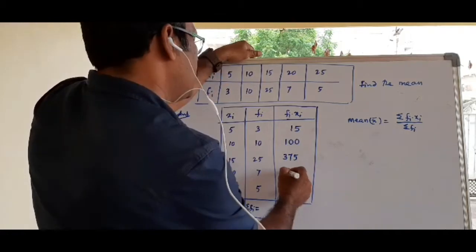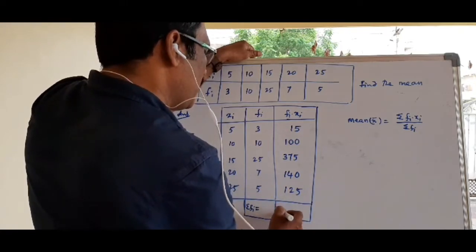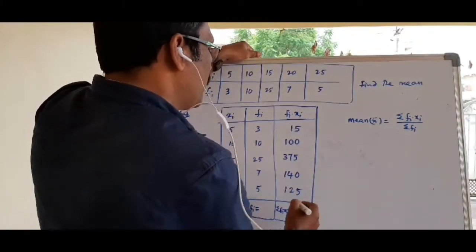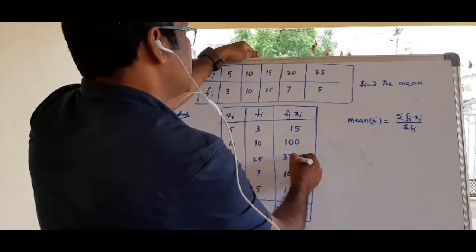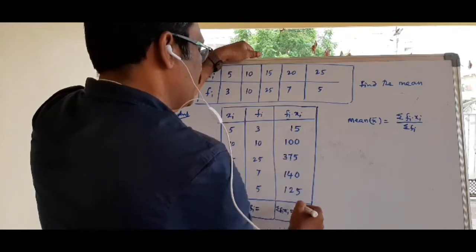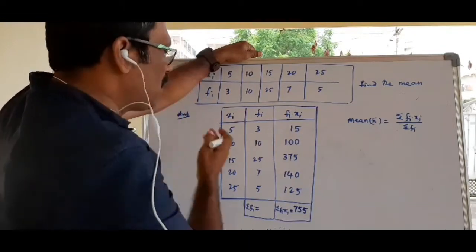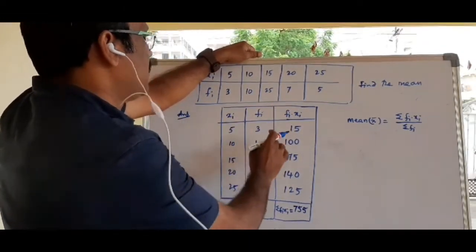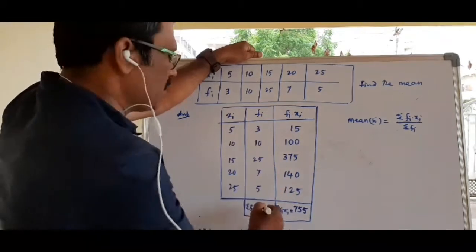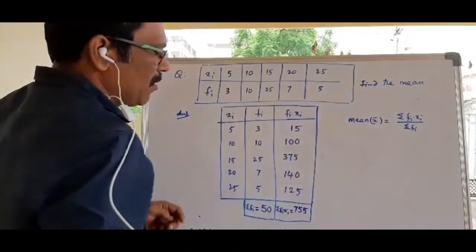Computing the products fixi: 5×3 = 15, 10×10 = 100, and continuing for the remaining rows. Adding all these products gives σfixi = 755. For σfi, adding all frequencies: 3 + 10 + 25 + 7 + 5 = 50. So σfi = 50.